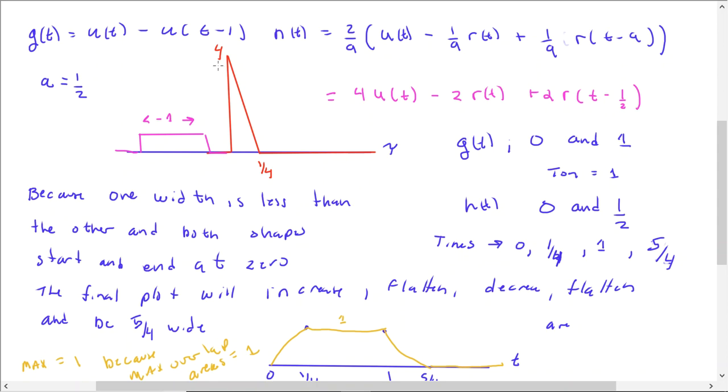But again, this is a very complicated thing. The big point is seeing how when one shape gets really much thinner than another shape, how you start to get the original shape back. Because, remember, anything convolved with a delta function is the thing.